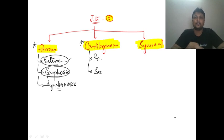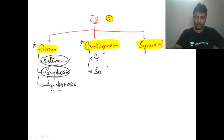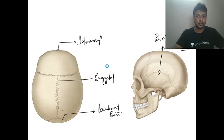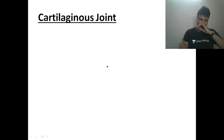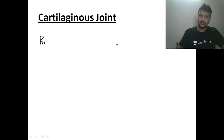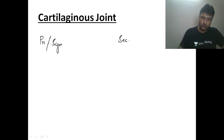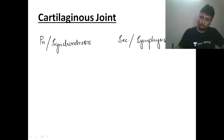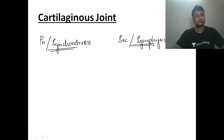That completes the fibrous joint. Now the cartilaginous joint is divided into two categories: primary cartilaginous joint and secondary cartilaginous joint. The primary cartilaginous joint is also known as synchondrosis, and the secondary cartilaginous joint is also known as symphysis.